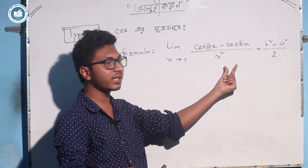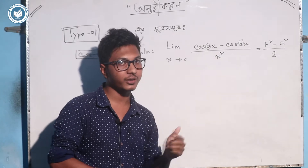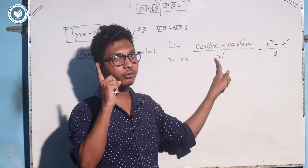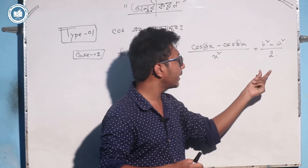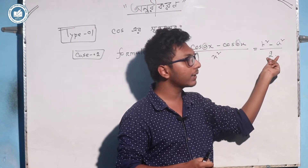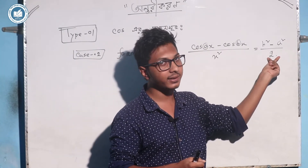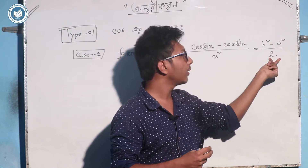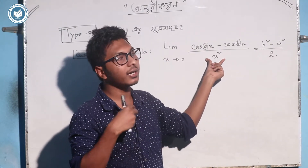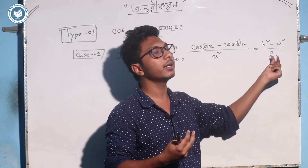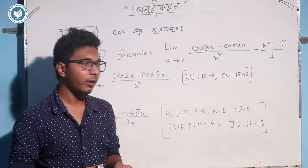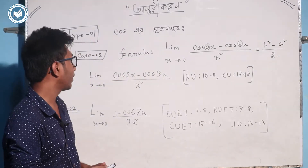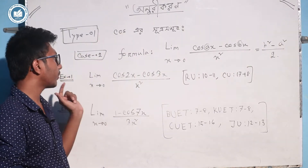Here, cos bx minus cos bx is 1 squared. 1 squared is 6 into 1. If we have 1, we will have 2. So if we have 2, we will have 2. So we will have 2 math.